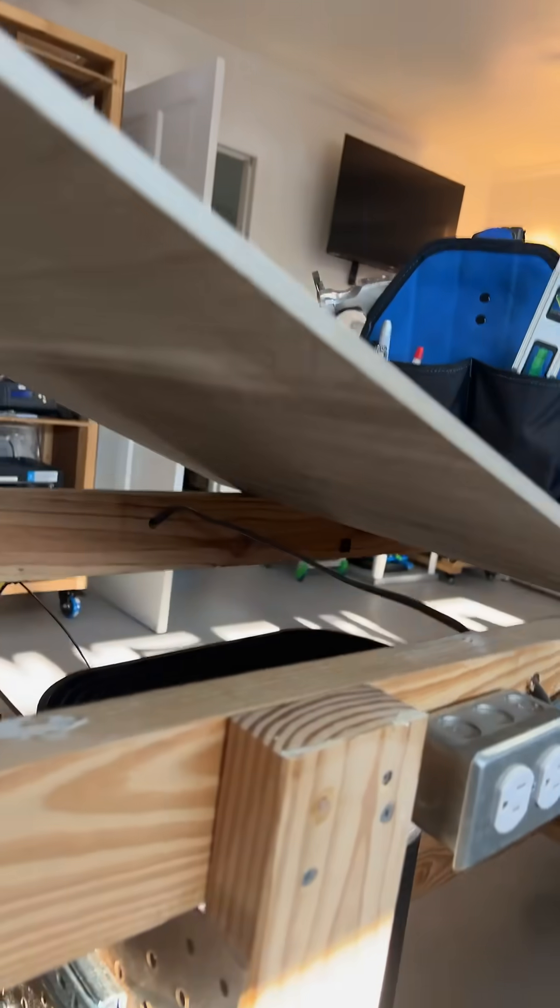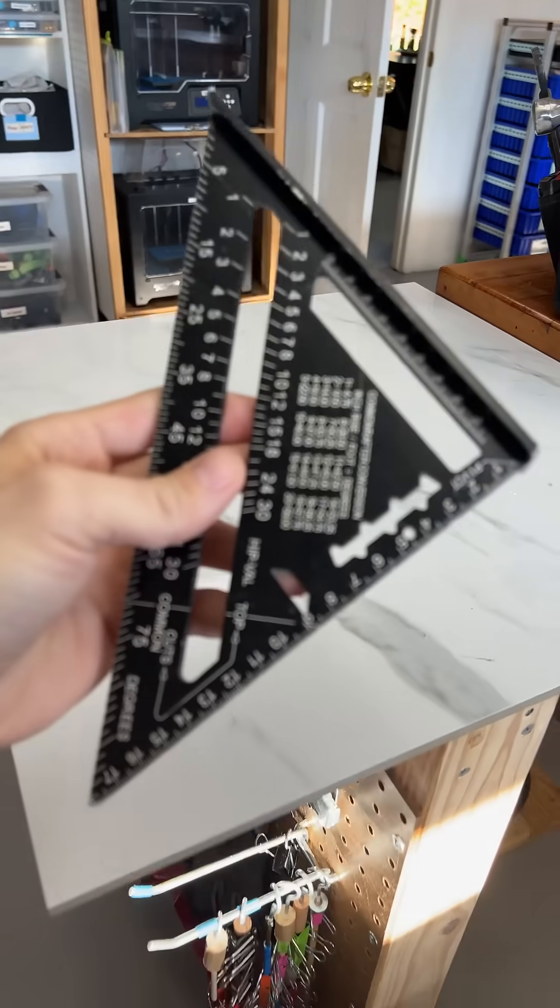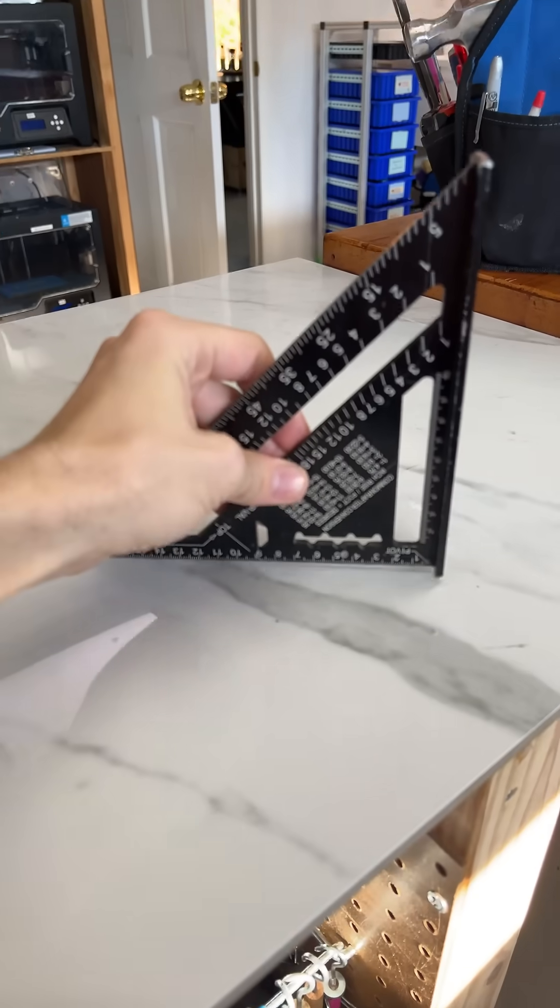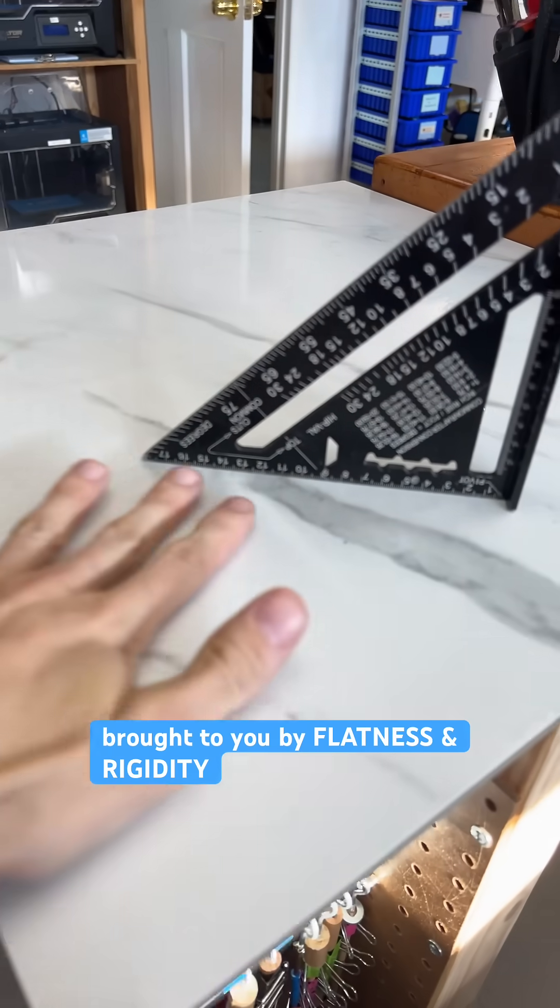This is the best six dollars I ever spent. Squares are great, but square to what? How about something perfectly flat?